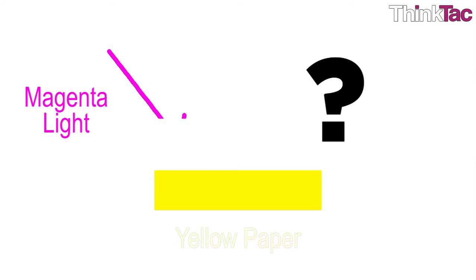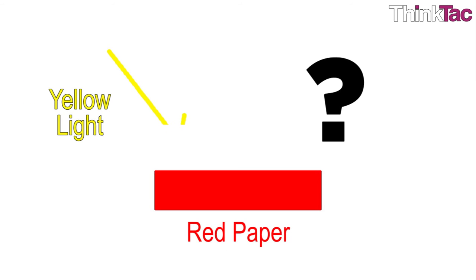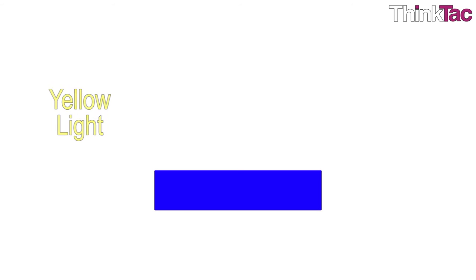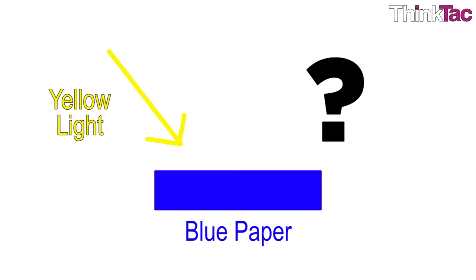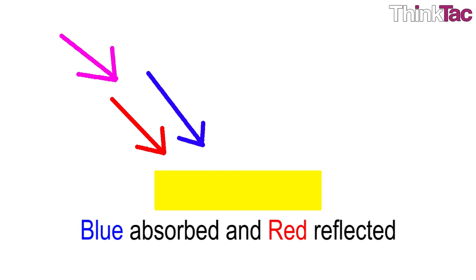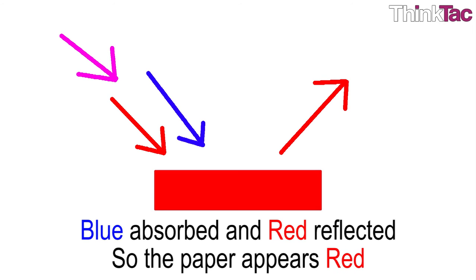The first question: magenta light shines on a sheet of paper containing a yellow pigment. Determine the appearance of the paper. So for the first one, magenta light is thought to consist of red light and blue light. A yellow pigment is capable of absorbing blue light. Thus, blue is subtracted from the light that shines on the paper. This leaves red light. If the paper reflects the red light, then the paper will look red.